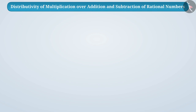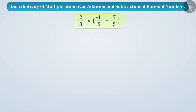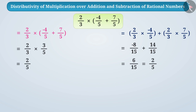Let us understand this with an example. Suppose we want to multiply 2/3 by (−4/5 plus 7/5). We will do it in this way, or we will do it in this way — we are getting the same result in both cases.